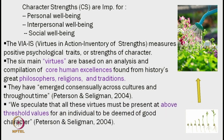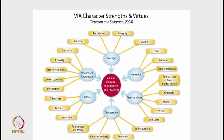They speculate that all these virtues must be present at above-threshold values for an individual to be deemed of good character. We should have an above-average level to maintain high character strengths, contributing to personal, interpersonal, and social well-being. Let us review this model: in the red circle, Seligman's initial model of well-being has three components — pleasure, engagement, and meaning — directed by certain virtues.